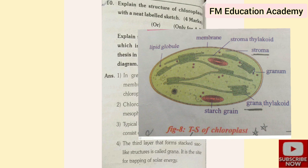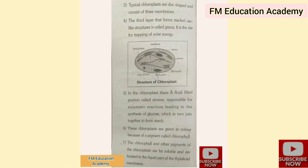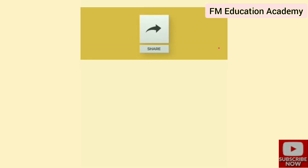The third layer forms stacked sac-like structures called grana, which is the site of trapping solar energy. The fluid-filled portion in the chloroplast is called stroma, responsible for enzymatic reactions leading to synthesis of glucose, which joins together to form starch. Chloroplasts are green in color because of a pigment called chlorophyll. The chlorophyll and other pigments of the chloroplasts are fat-soluble and are located in the liquid part of the thylakoid membrane.